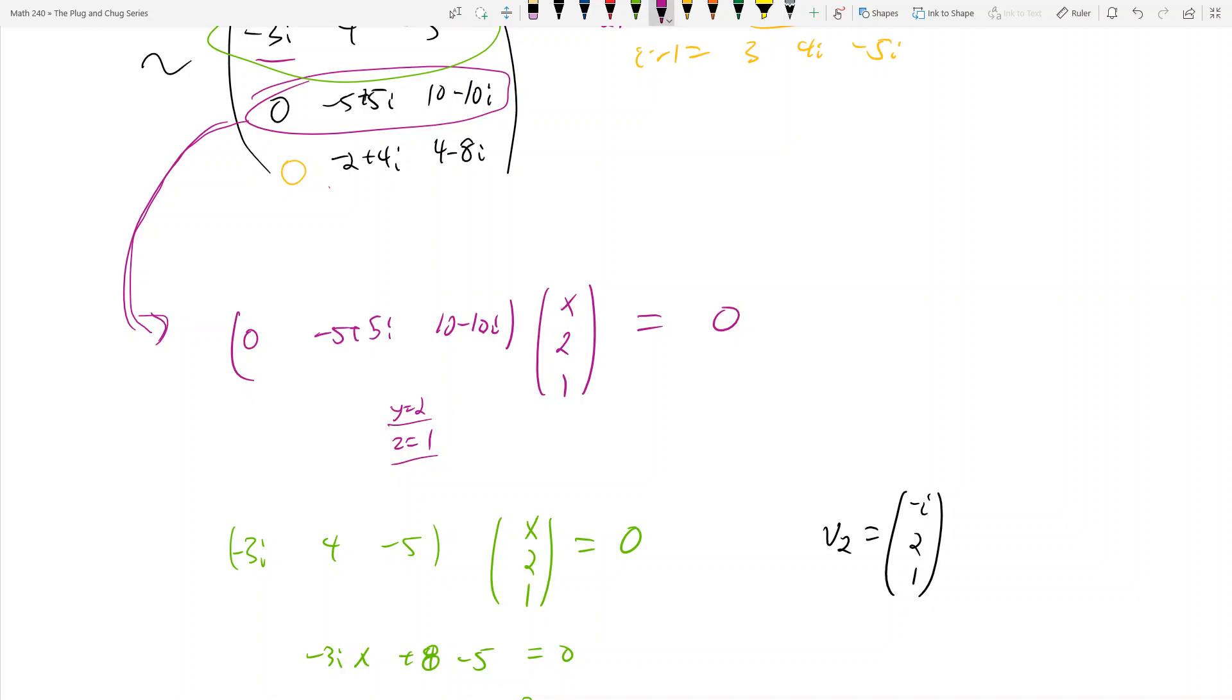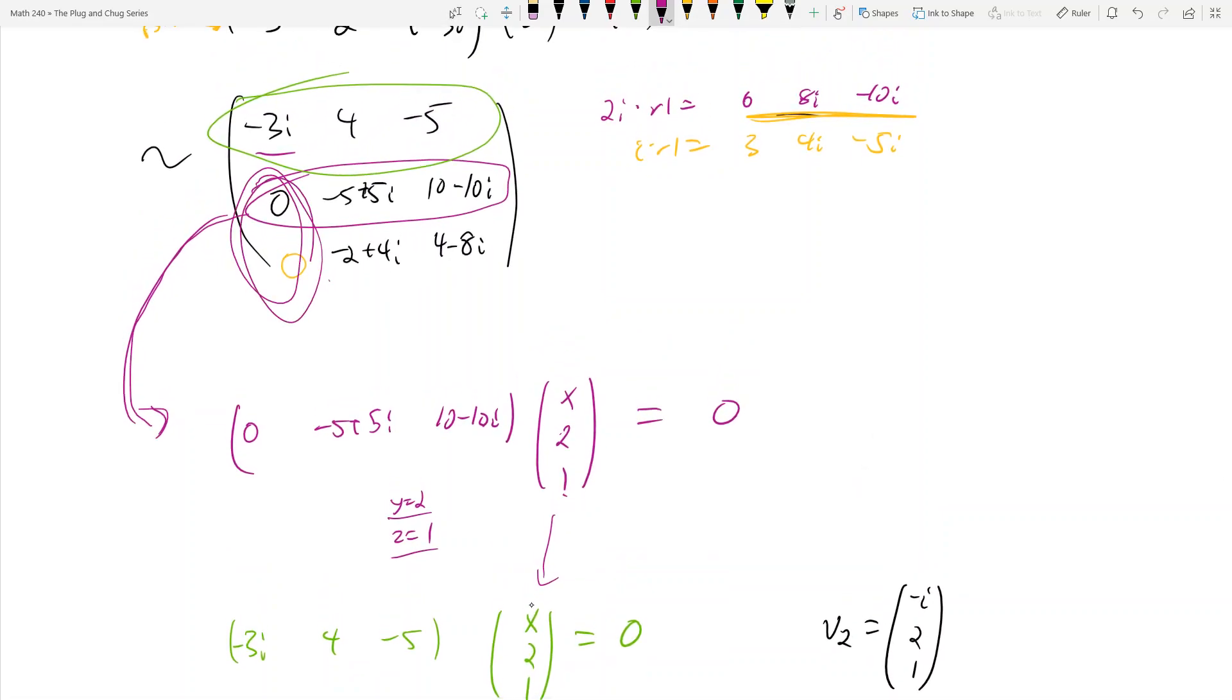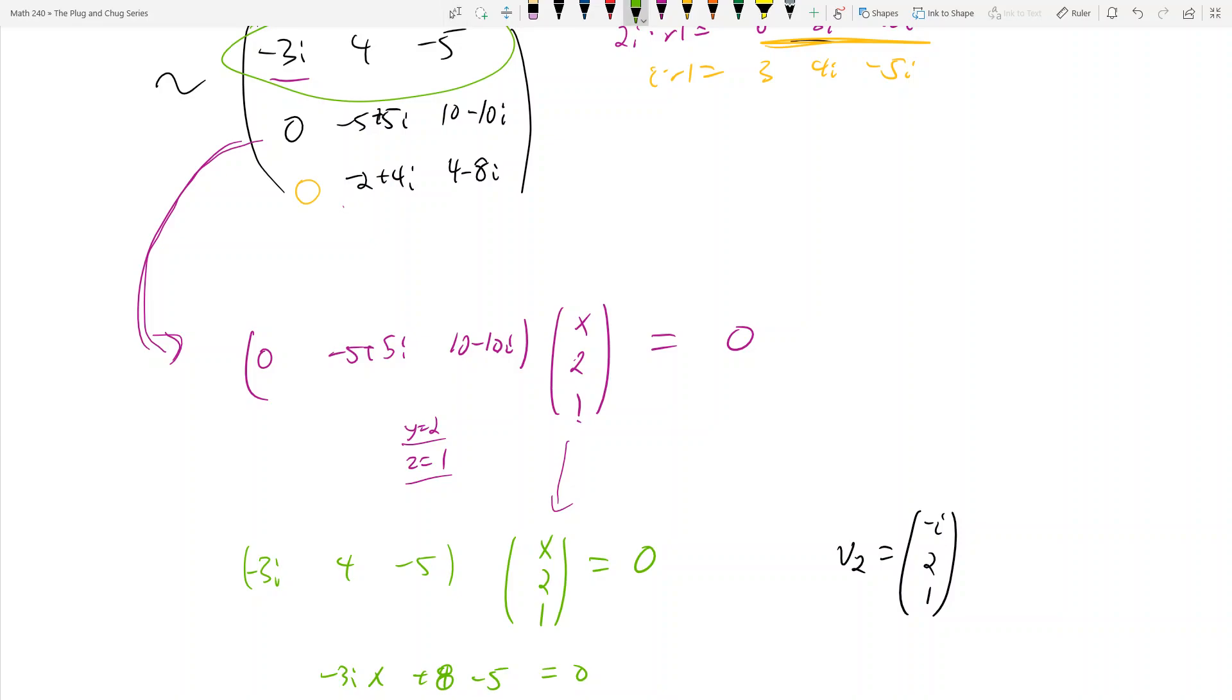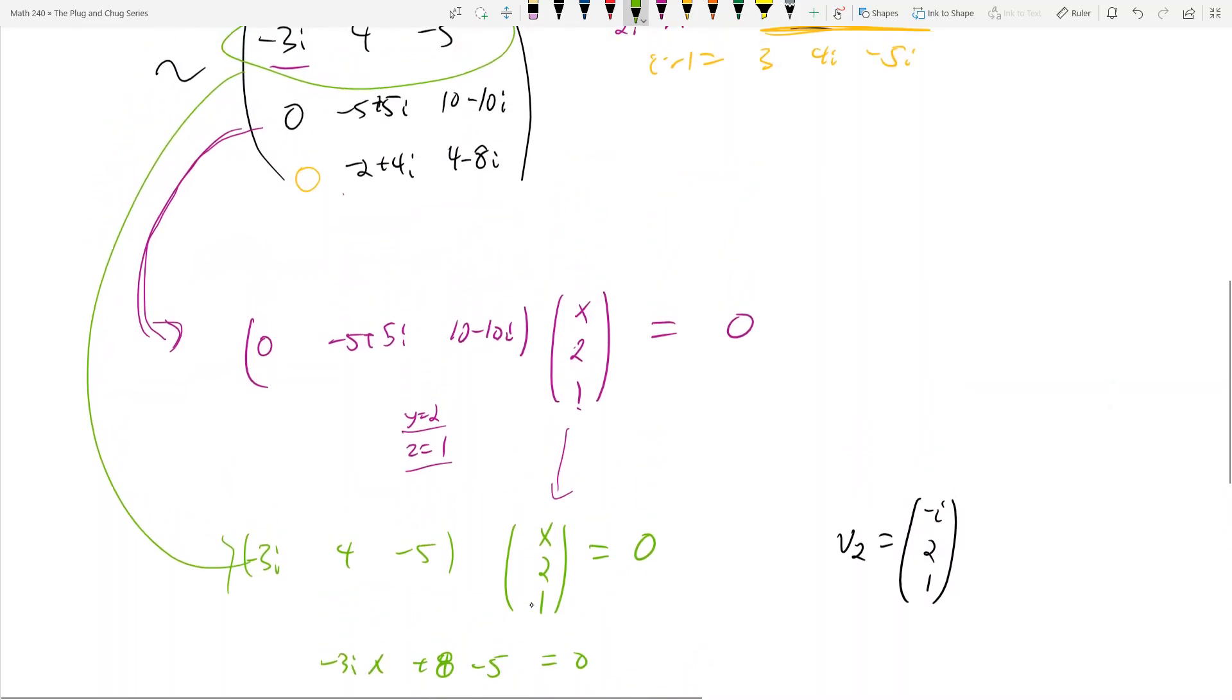I took the second row because I could easily eyeball and see that y equals 2 and z equals 1 satisfy this matrix multiplication equation, which gets me zero. Then I take my guess with the 2 and 1, and go to the row that doesn't have a zero in the first column, which is the first row. I multiply by (x, 2, 1), set it equal to zero, solve for x, and you'll see that x equals -i, which gives me my final eigenvector v2.